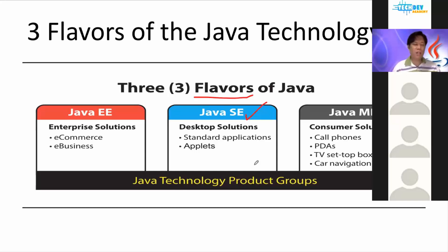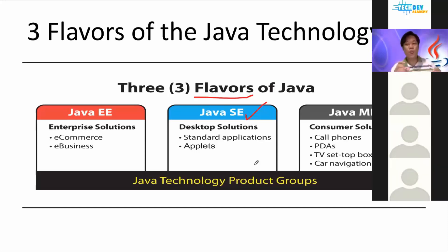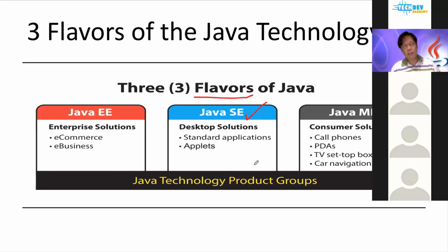The initial brand for Google is actually 'Googol,' which is a mathematical term, and then they decided to change it to Google. They created Google in 1996 or 1997, if I'm not mistaken.